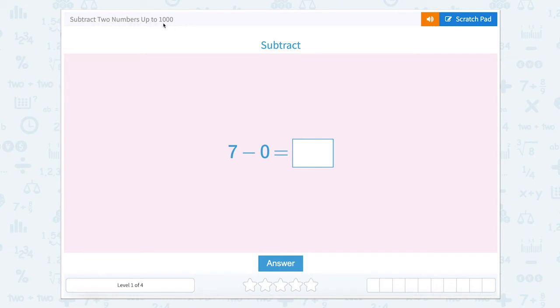Subtract two numbers up to a thousand. The directions ask us to subtract. So let's use our scratch pad. We have seven and we're taking away zero. If we have seven minus zero, well that's not changing the number any, so we'll still have seven. So let's type in seven.